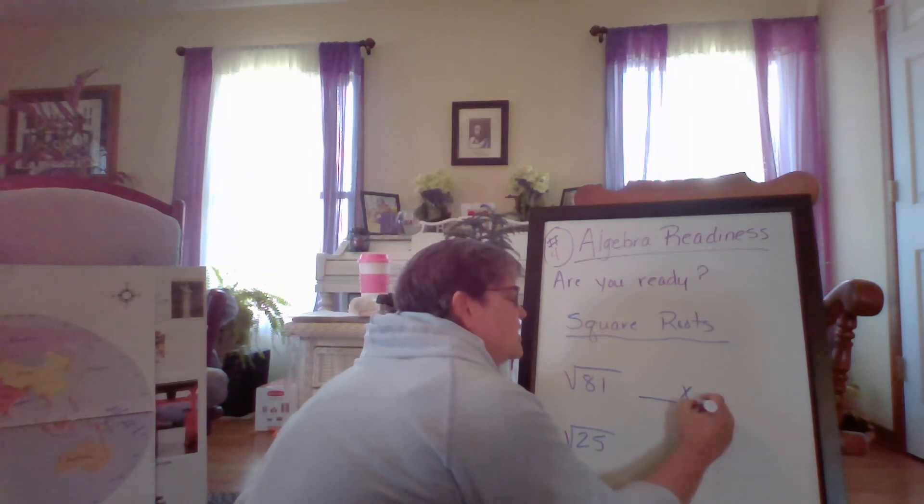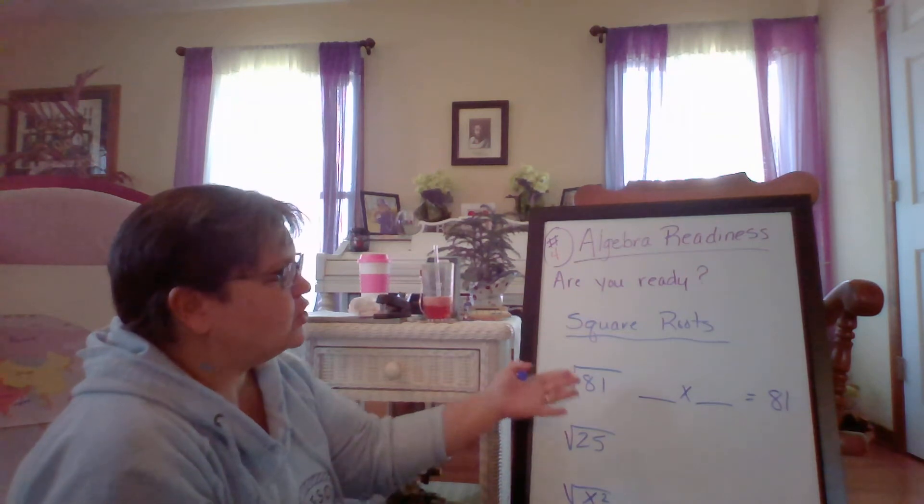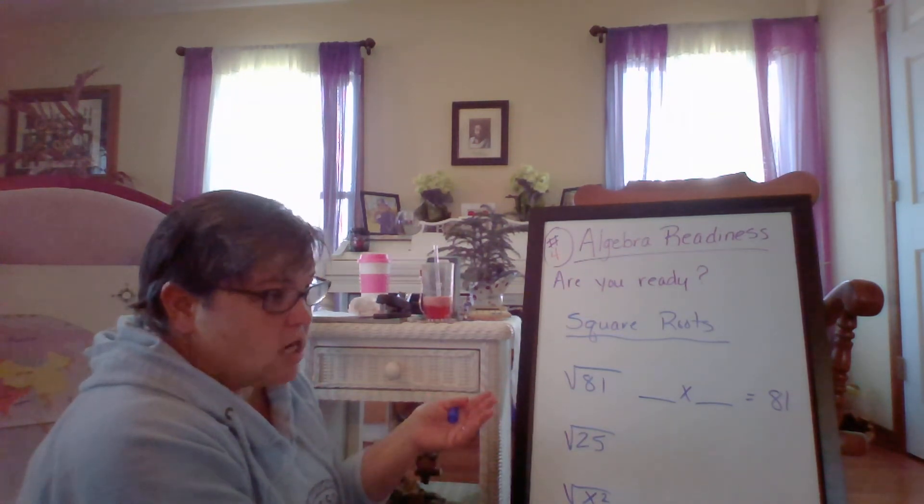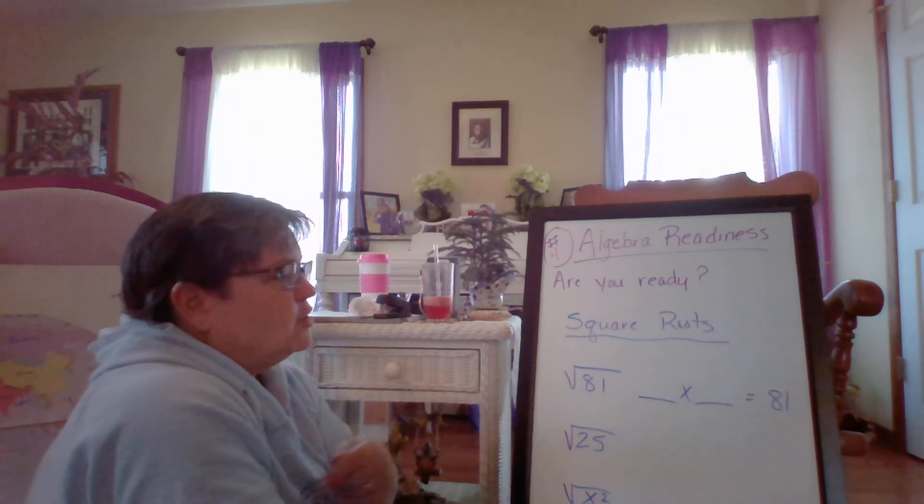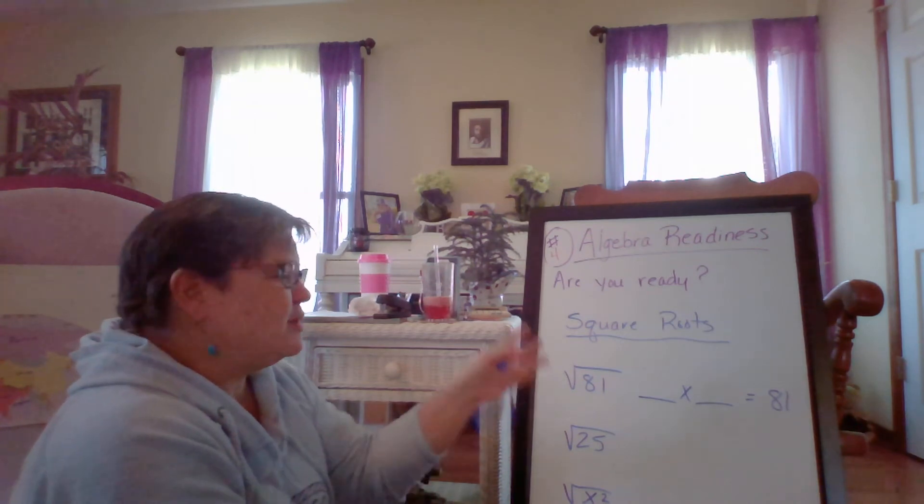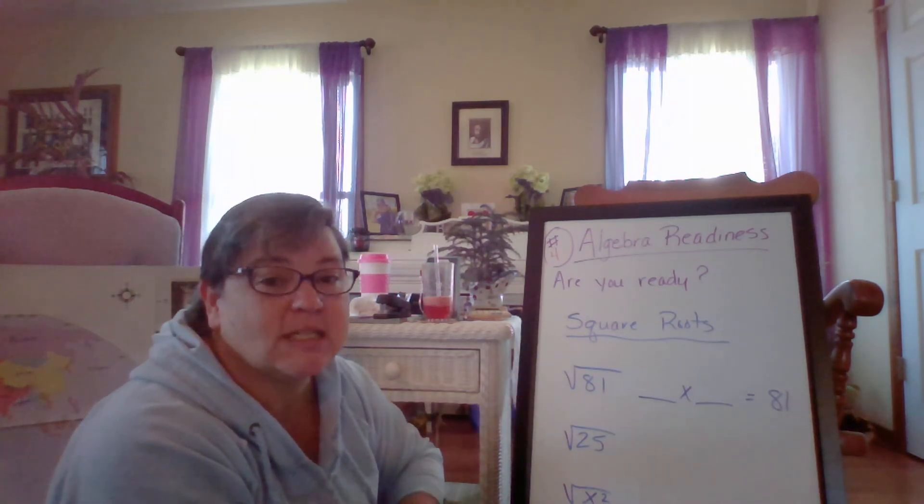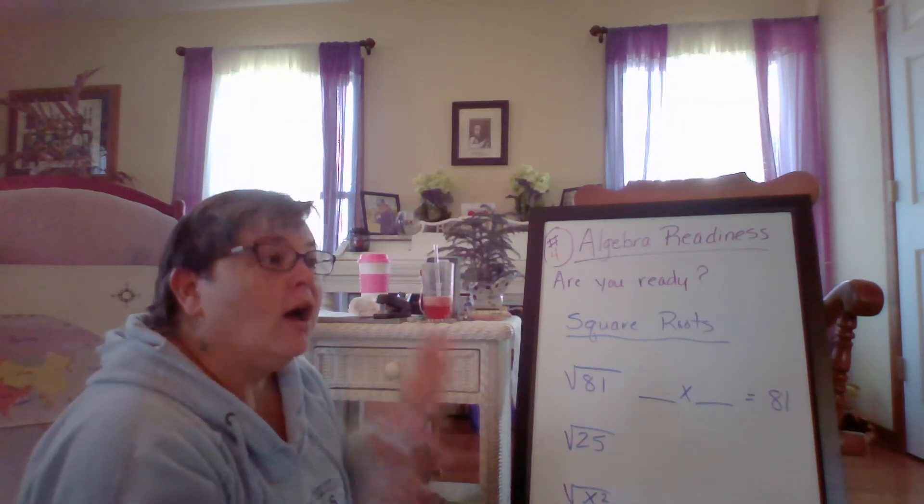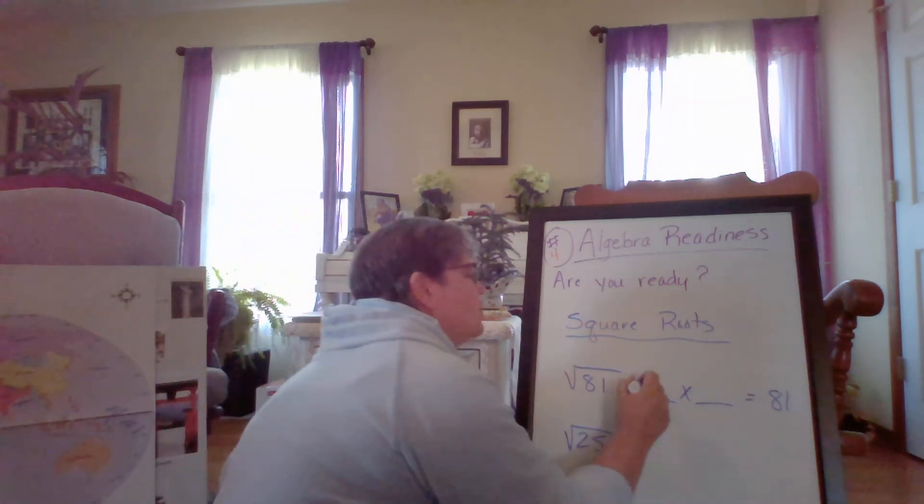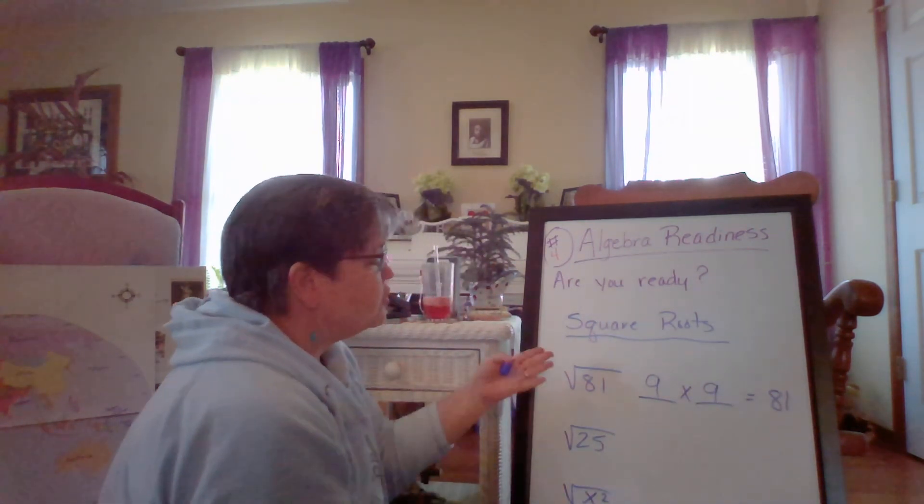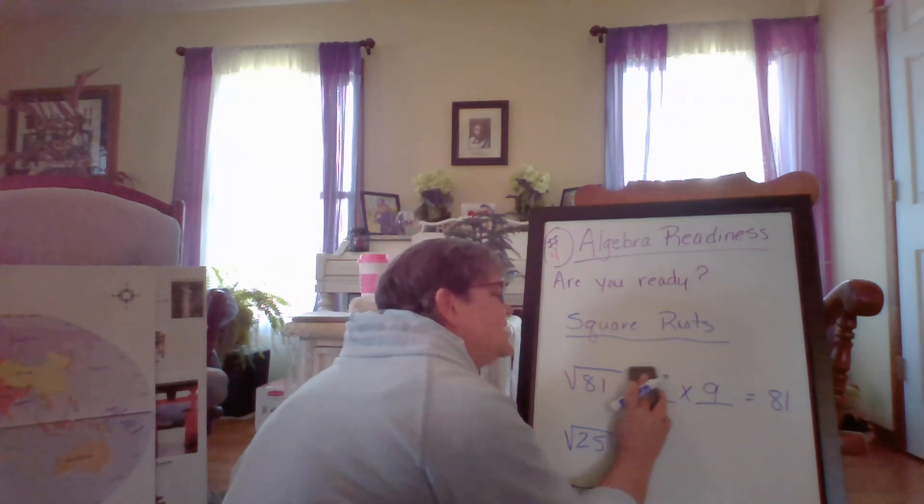So basically today, what number times itself equals 81? So you're thinking, I don't know. Okay, well, let's just start with numbers. Two times two, well that's four. Three times three, nine. Four times four is 16. Five times five is 25. Six times six is 36. Seven times seven is 49. Eight times eight is 64. Nine times nine is 81. Yay, I found it. So nine times nine equals 81. So the square root of 81 is nine.